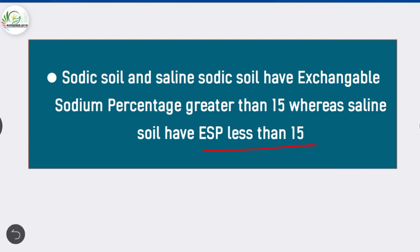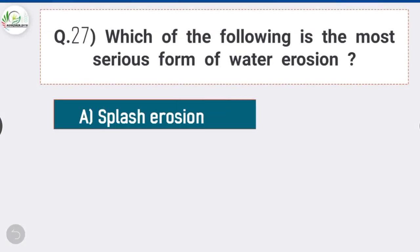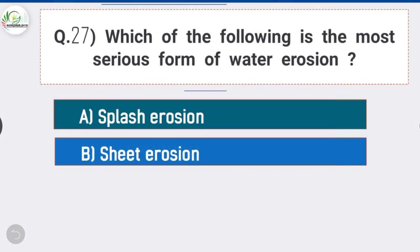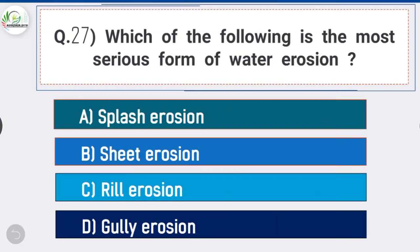Question number 27: Which of the following is the most serious form of water erosion? Answer is option B, sheet erosion.